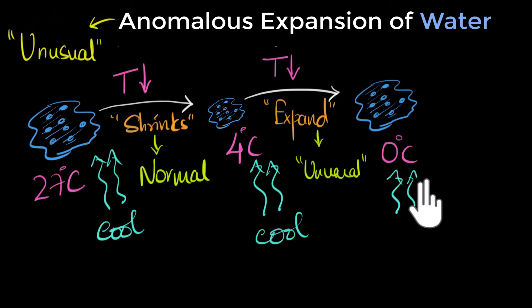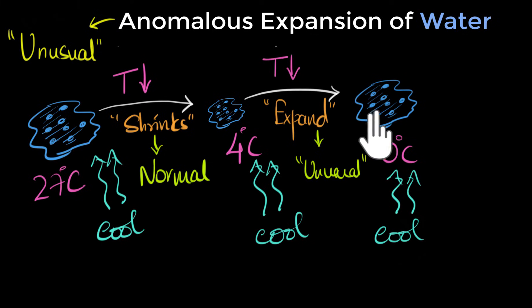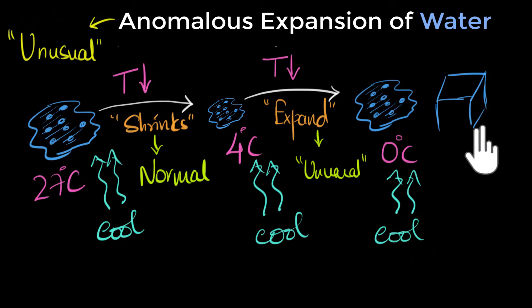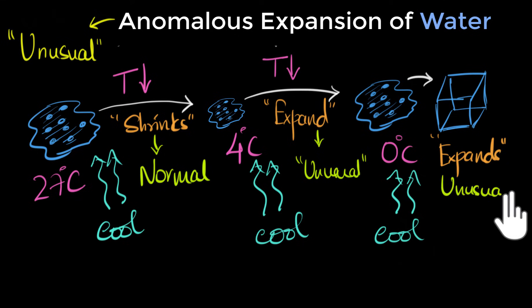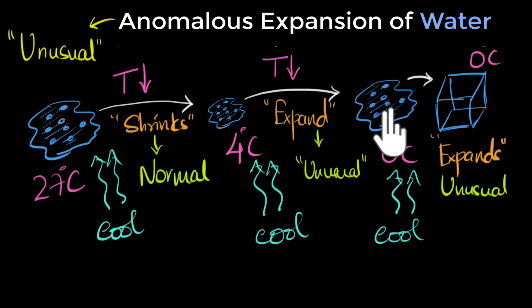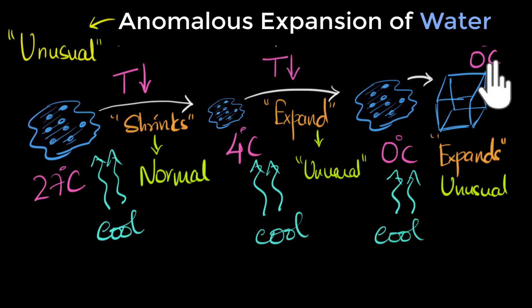Cool it even further and we have now reached the freezing point of water, so water will start crystallizing into ice. Even during this crystallization process, the unusual behavior continues — we will see a continued expansion taking place. So from four degrees Celsius all the way to zero degrees Celsius ice, during this region, we are seeing an unusual expansion.